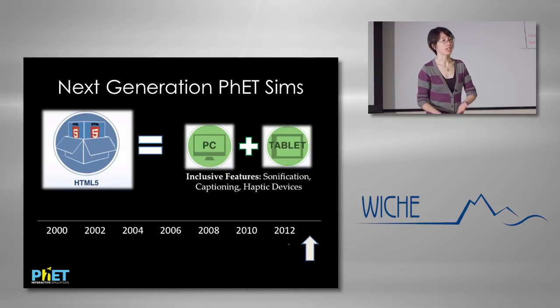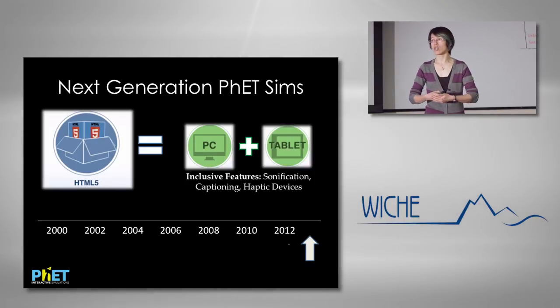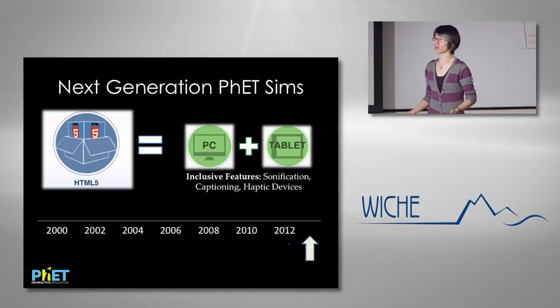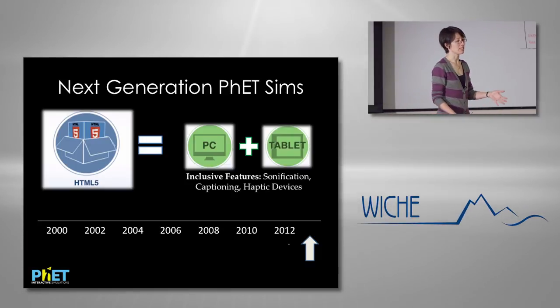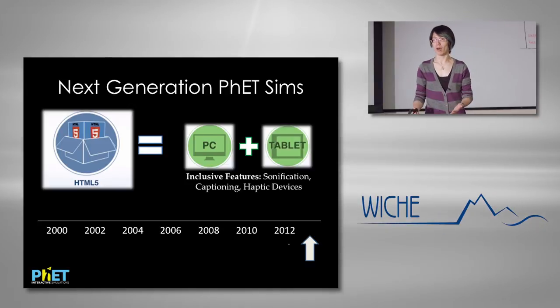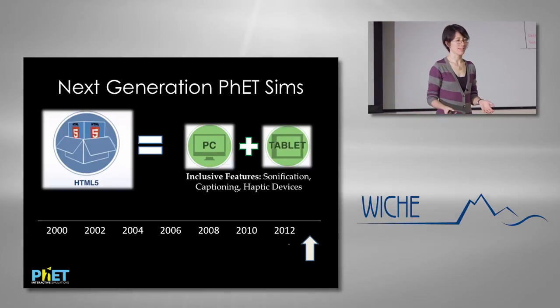Right now the focus of the project is what we call our next-generation sims. The early part of the project all of our sims were coded in Java, which meant you needed a laptop with a full operating system — Windows or Mac — and there were often technical issues. Instructors would try to run them, Java would have updated in the background, and suddenly the sim wouldn't run. So we're slowly moving all 130-odd sims to HTML5.